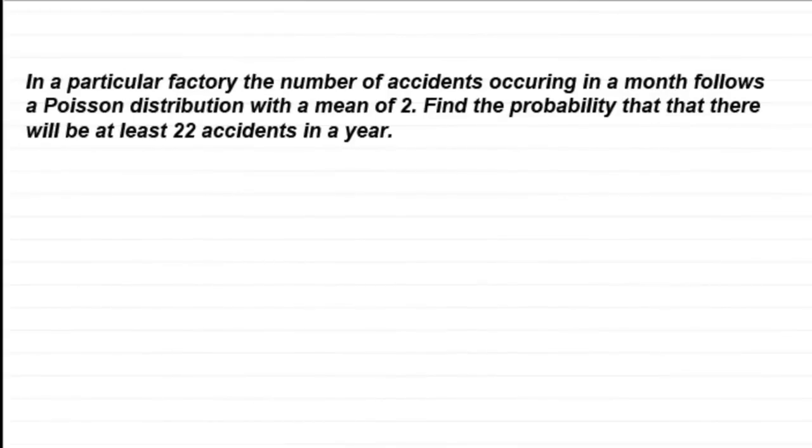Hi, welcome to this tutorial on the normal approximation to the Poisson distribution. To demonstrate this, I've got an example where in a particular factory the number of accidents occurring in a month follows a Poisson distribution with a mean of 2. Find the probability that there will be at least 22 accidents in a year.